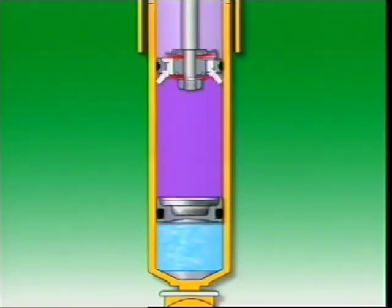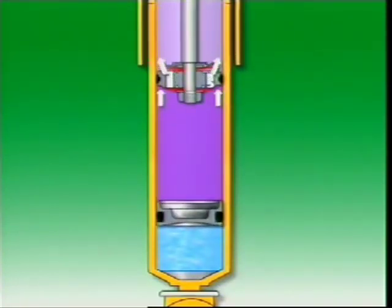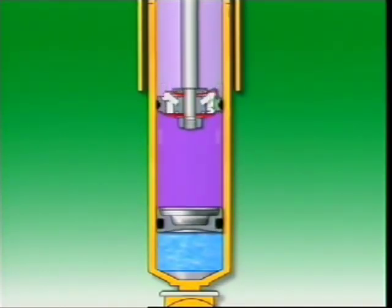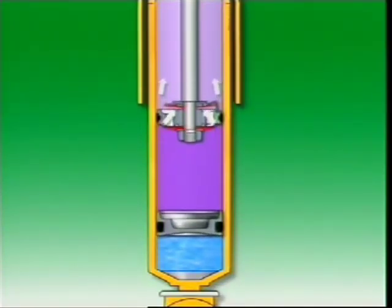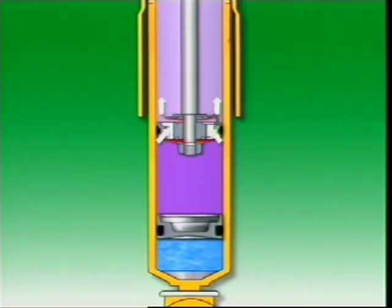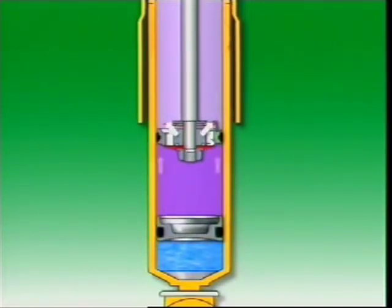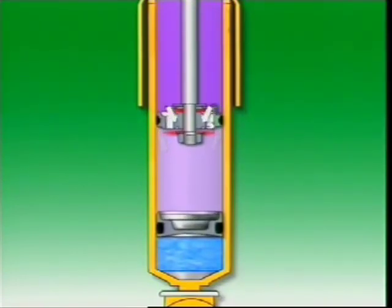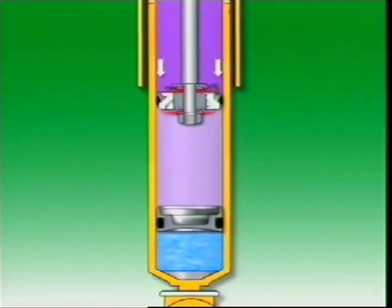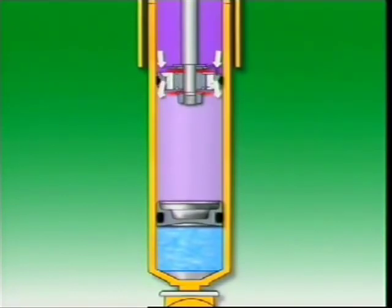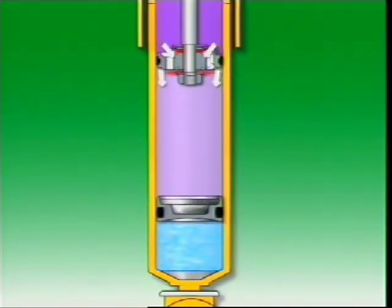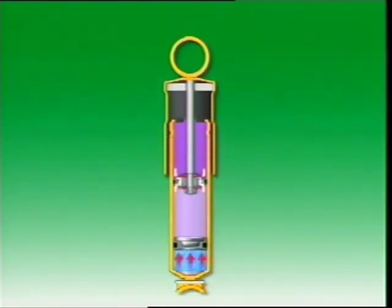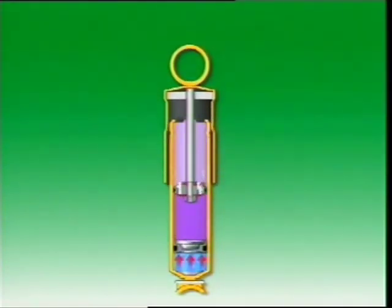On bump, the piston moves downwards and the penetration of the piston rod displaces a quantity of oil equal to its volume. The separation piston is displaced accordingly and gas pressure increases. On rebound, the piston and rod move upwards and gas pressure reduces as the separation piston follows the movement. Pressure on the oil is maintained even when the piston and rod are at the top of their stroke.